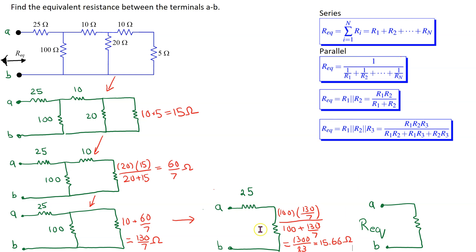The last step is to combine the 25 ohm resistor and the 15.66 ohm resistors, which are in series. Hence the final value is 25 plus 15.66, which equals about 40.66 ohms.